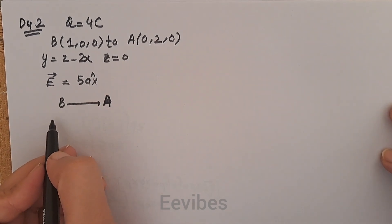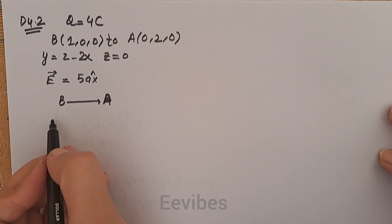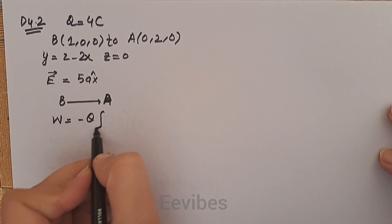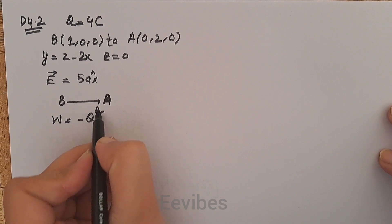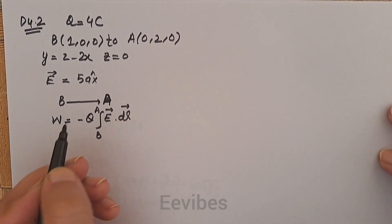We will find out the work done while moving this charge from B to A, which is defined by W = -Q ∫(B to A) E·dl. E and dl both are vector quantities.